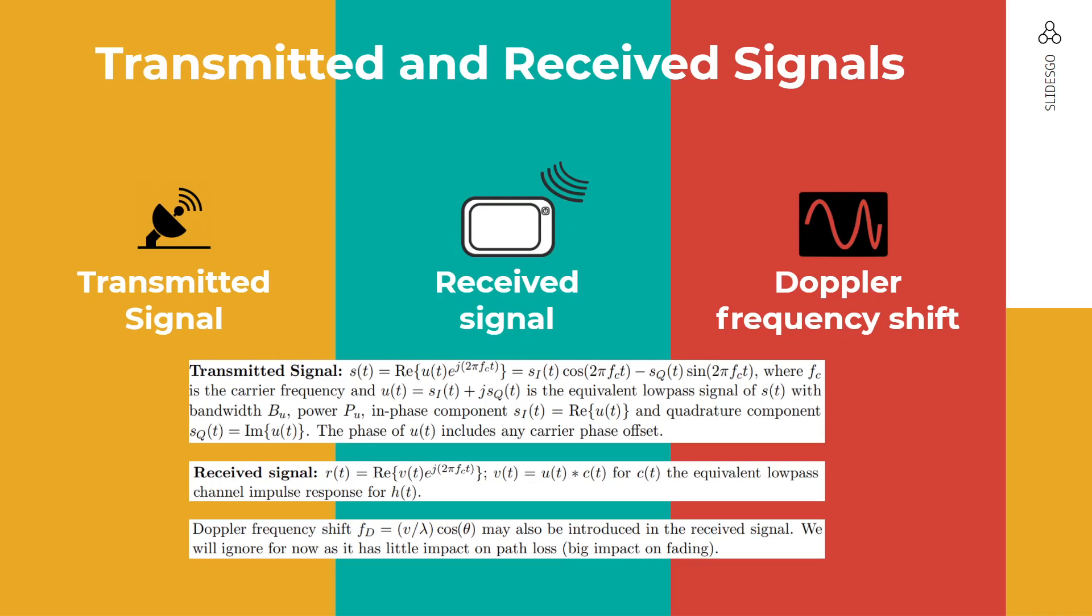And then the next we have received signal, which is defined by the function r(t) equals Re[v(t)e^(j2πfct)], where v(t) equals u(t) times c(t), and c(t) is the equivalent low pass channel impulse response for h(t). And the next is Doppler frequency shift, which is defined as fd equals v per lambda cos theta. This may also be introduced in the received signal. We will ignore for now as it has little impact on path loss, but it has big impact on fading.